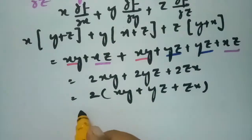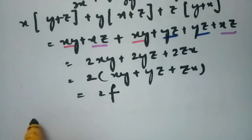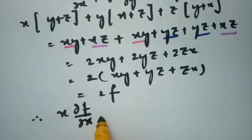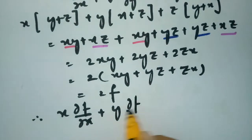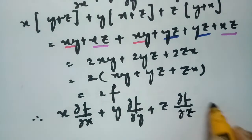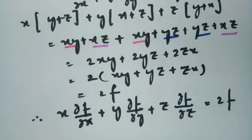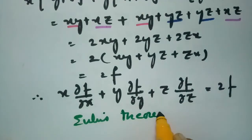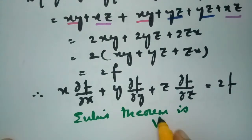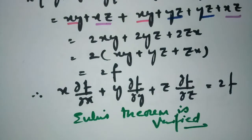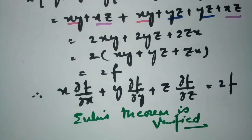Therefore x into ∂f/∂x plus y into ∂f/∂y plus z into ∂f/∂z equals 2f. Hence Euler's theorem is verified for solution 2 as well. This is how we solve these problems — thank you for watching, and have a look at my next video too.